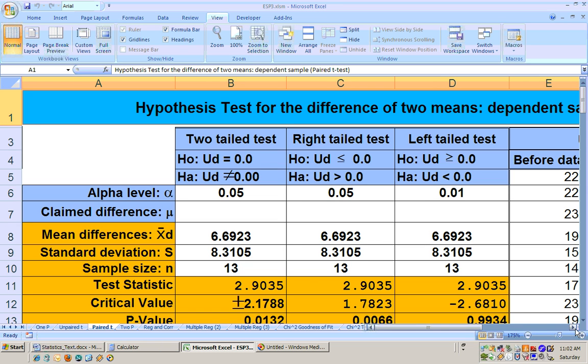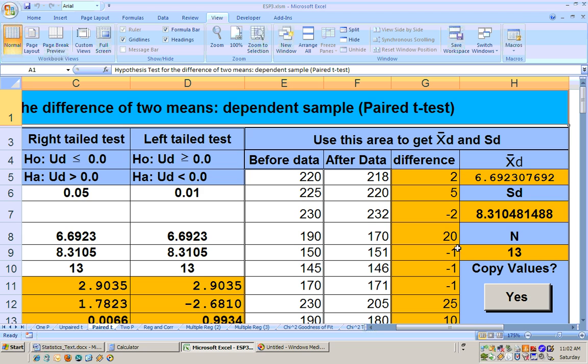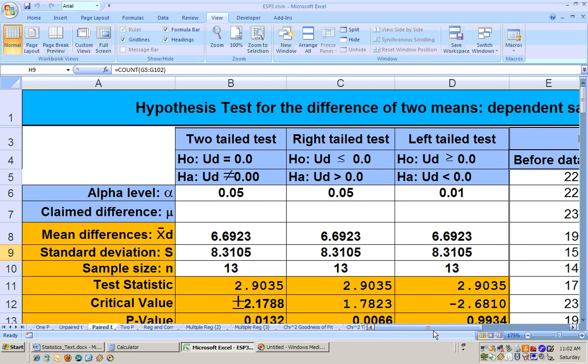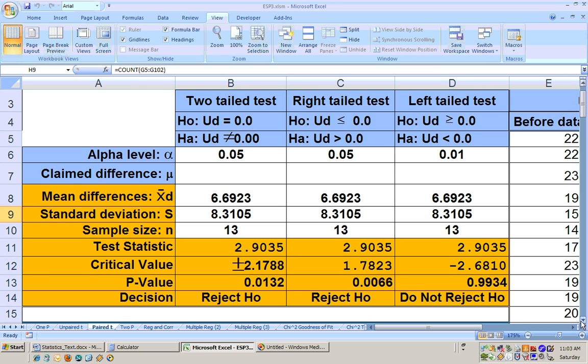So was there significant weight loss? Most people lost weight on this diet. A few people gained a little bit. The average weight loss was 6.69 pounds with a standard deviation of 8.31 pounds. We had 13 people do this. And was there significant weight loss? Yeah, there is. What's the most significant alpha level? We can go clear down to the 0.01 alpha level. So at the 0.01 alpha level, I was able to show that there was significant weight loss on this program. Significant weight loss meaning significantly more weight loss than nothing.